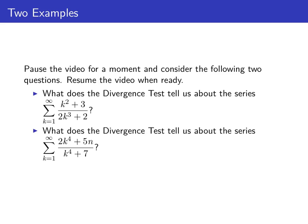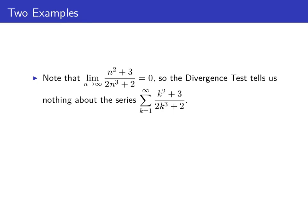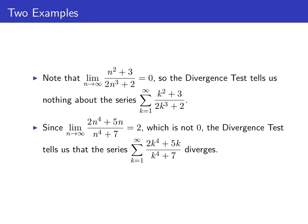Let's test our knowledge of the divergence test. Pause the video and look at these two series — what does the divergence test tell us about them? In the first case, the sequence of n-th terms n-squared plus 3 over 2n cubed plus 2 converges to 0, so the divergence test doesn't apply and tells us nothing about the corresponding series. In the second case, the limit of the n-th terms 2n to the 4th plus 5n over n to the 4th plus 7 is 2, which is not 0. Therefore the divergence test applies and tells us that the corresponding series diverges.